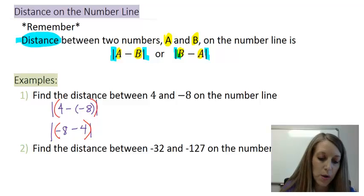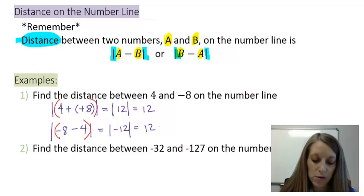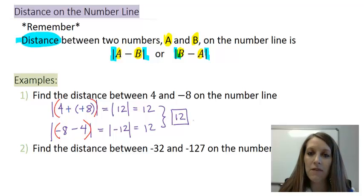In the first one, I can cancel out my double negative, so that makes it positive, which gives us absolute value of 12, and the absolute value of 12 is just 12 itself. And the second way, -8 minus 4 gives me the absolute value of -12, and the absolute value makes it positive. So either way we get it, we figure out the distance between 4 and -8 on the number line is 12.